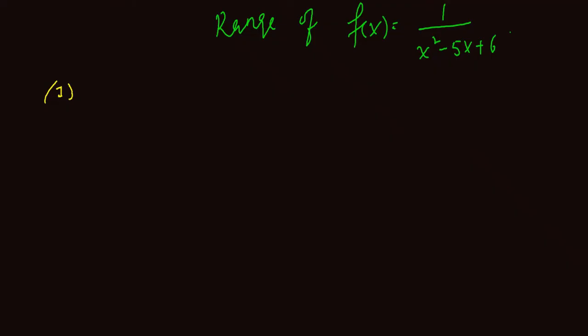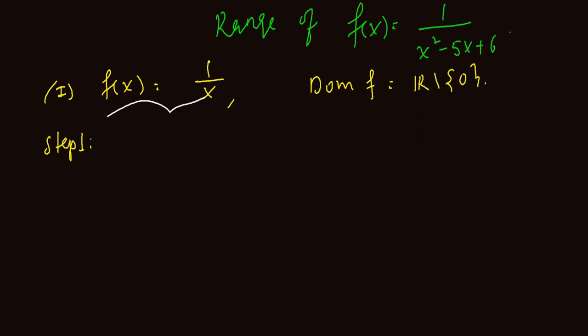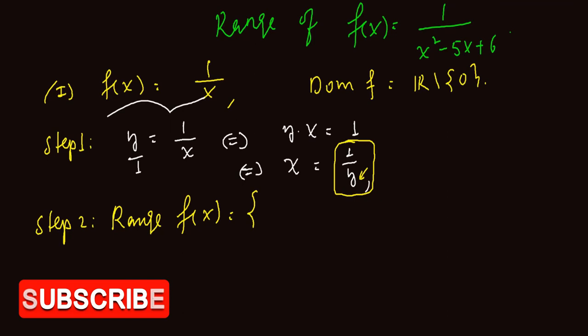Let's say our function is f of x equal to 1 over x. To find the range of the given function, there are two steps. Step 1: write f of x as y equal to 1 over x and solve for x. When you multiply cross, x times y is equal to 1, so x is equal to 1 over y. Step 2: the range of f of x equal to 1 over x is all y's that are elements of the real numbers, without those which are not allowed. In this case, y is different from 0.